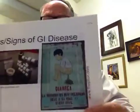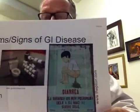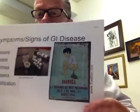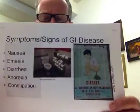Signs and symptoms of GI disease certainly include nausea, emesis, diarrhea, anorexia, and constipation.